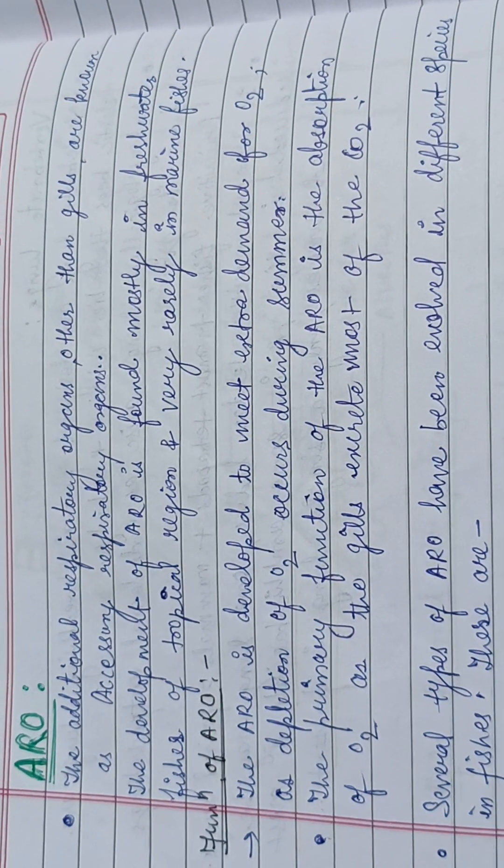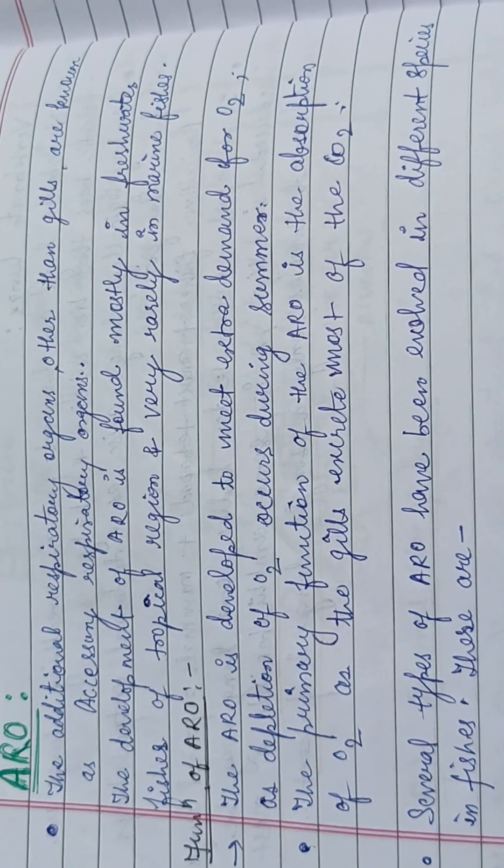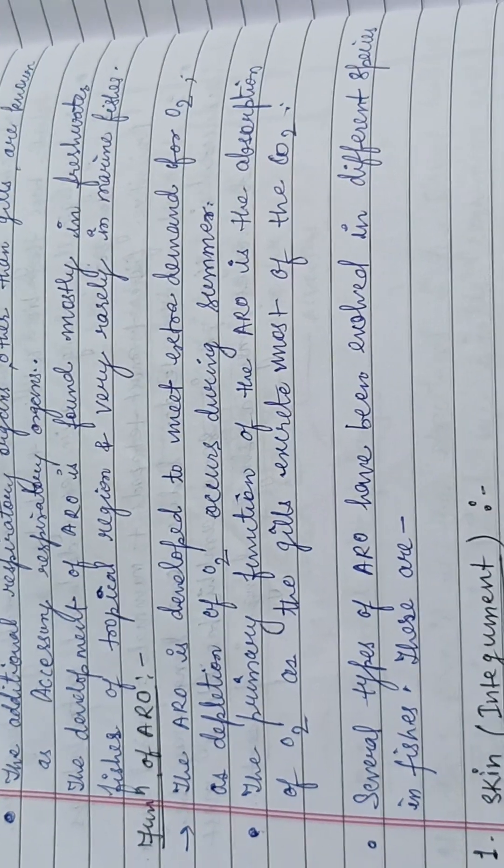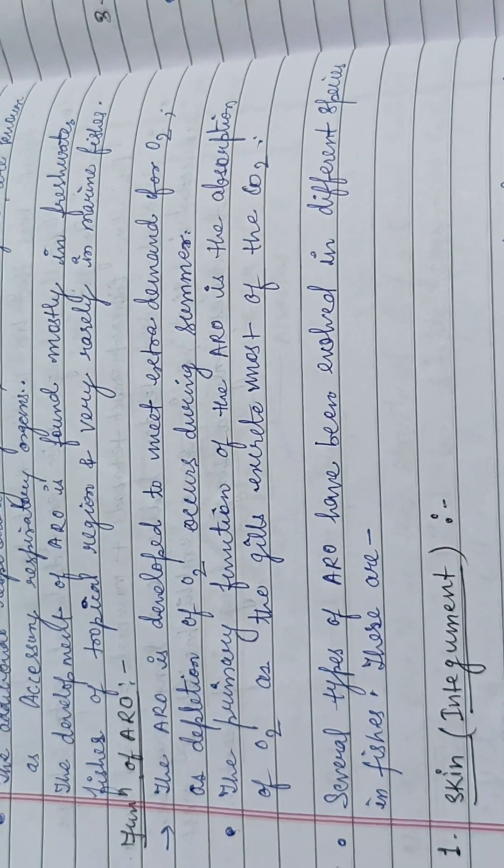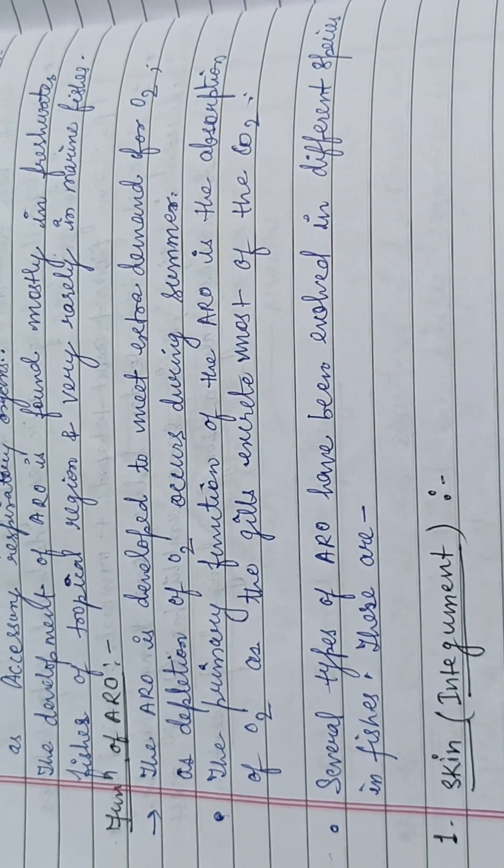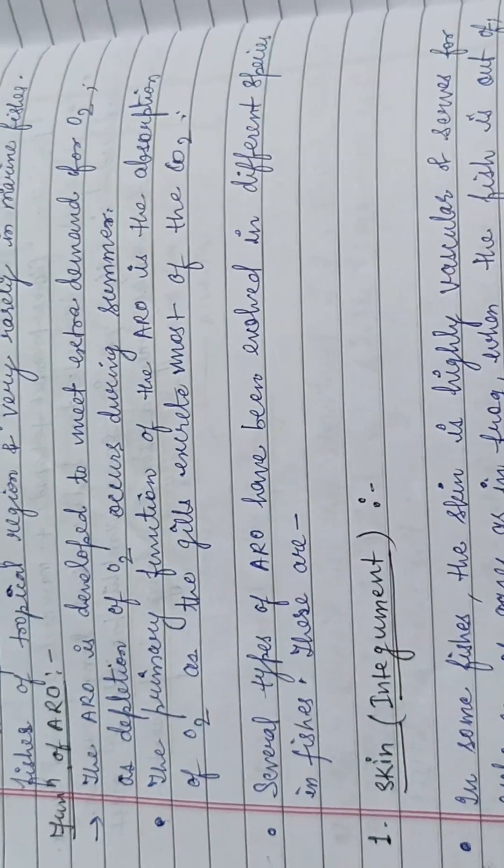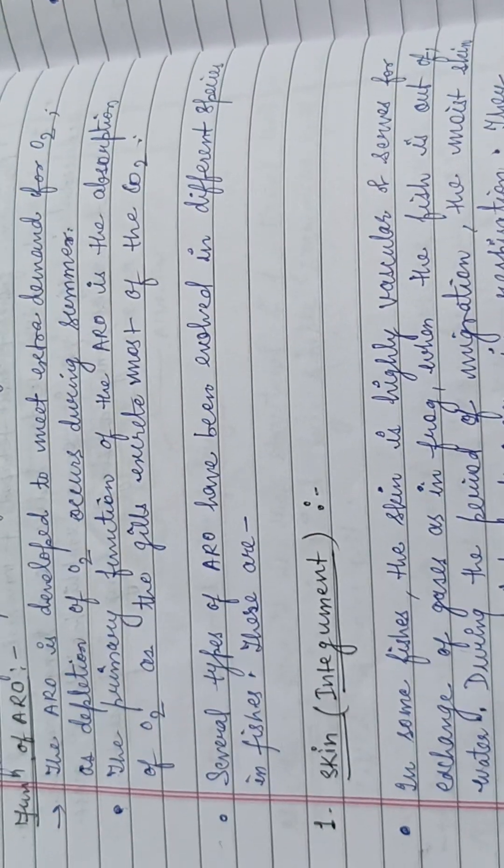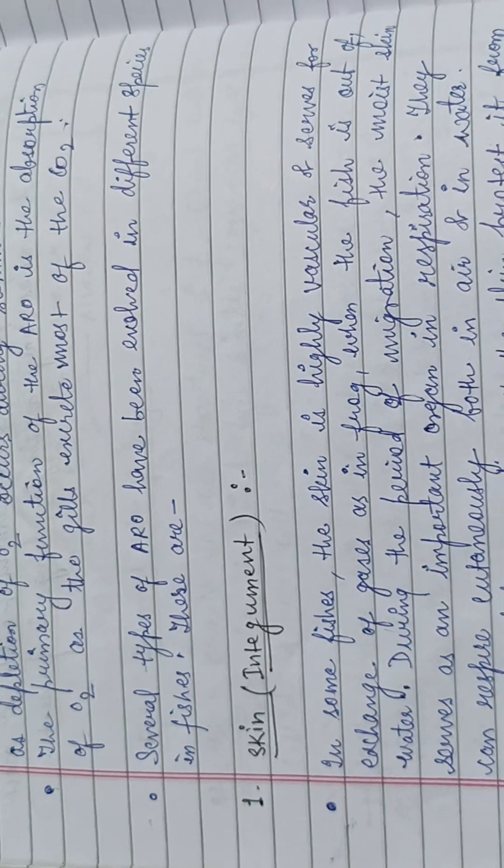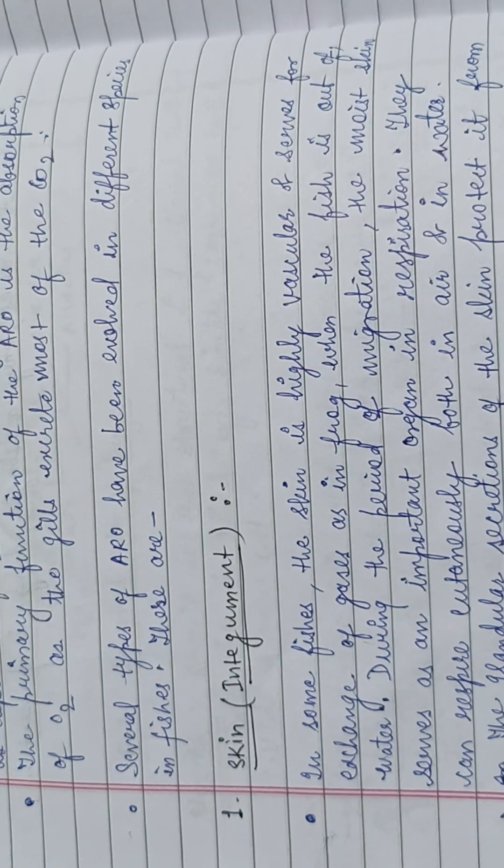Hi, here is a short description about the accessory respiratory organs known as ARO. ARO is developed to meet extra demand for oxygen as depletion of oxygen occurs during summer. The primary function of ARO is the absorption of oxygen as it will excrete most of the CO2.